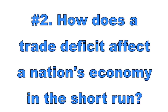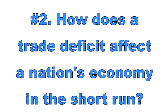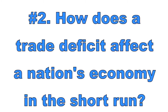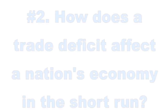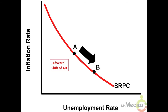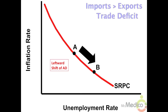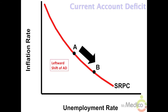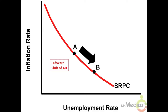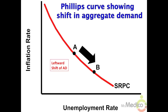Number two: how does a trade deficit affect a nation's economy? In the short run, a trade deficit occurs when a nation's imports are greater than its exports. Net exports are negative and the current account is showing a deficit. When a trade deficit increases in the short run, aggregate demand shifts to the left.